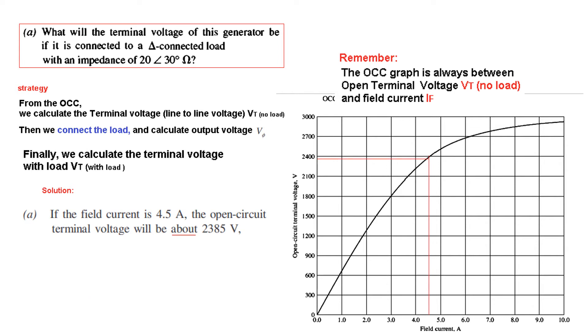The field current is 4.5 Ampere. So at 4.5 Ampere, the terminal voltage is approximately 2385 volts. This is the answer of the first part. At 4.5 Ampere, the open circuit phase voltage is 1377 volts.